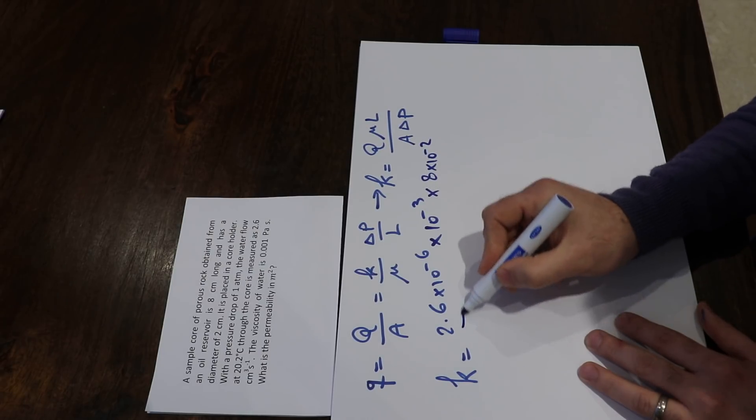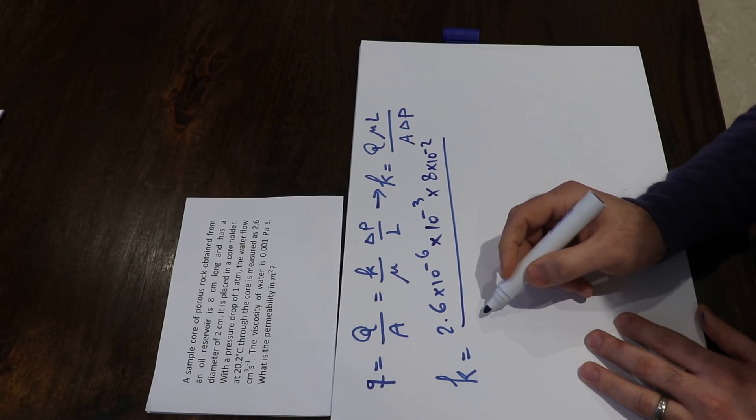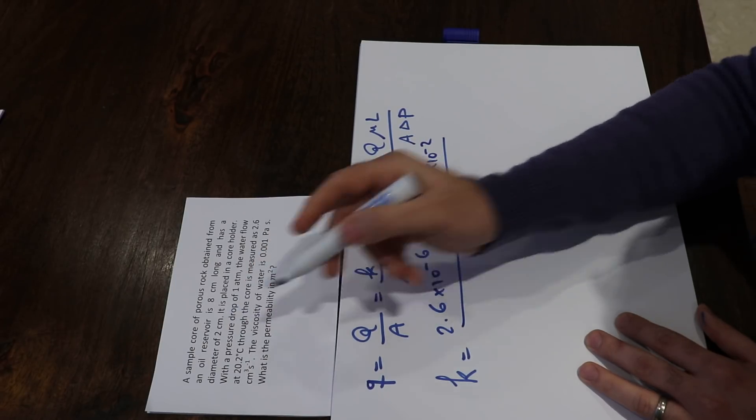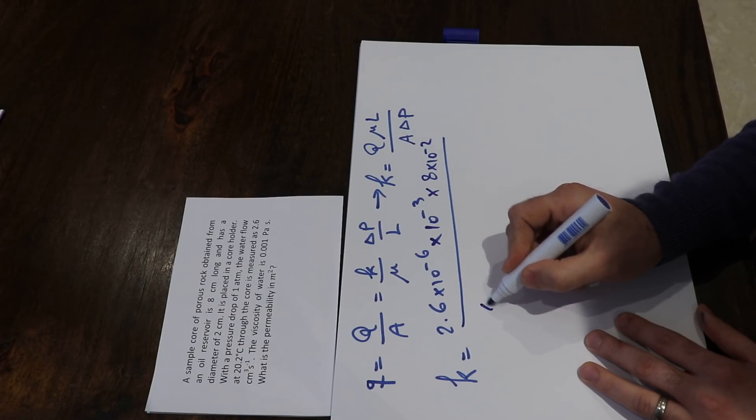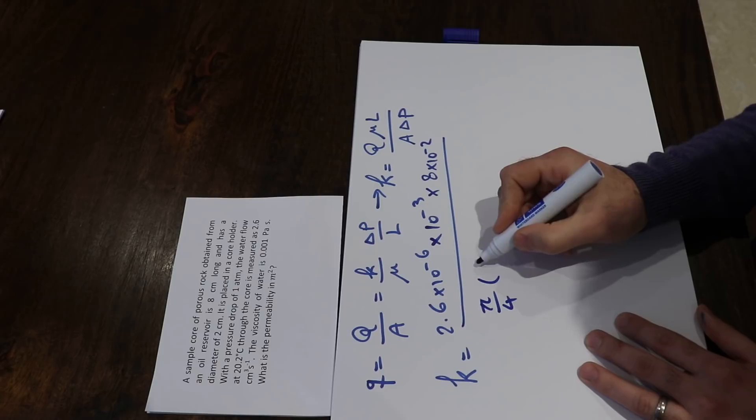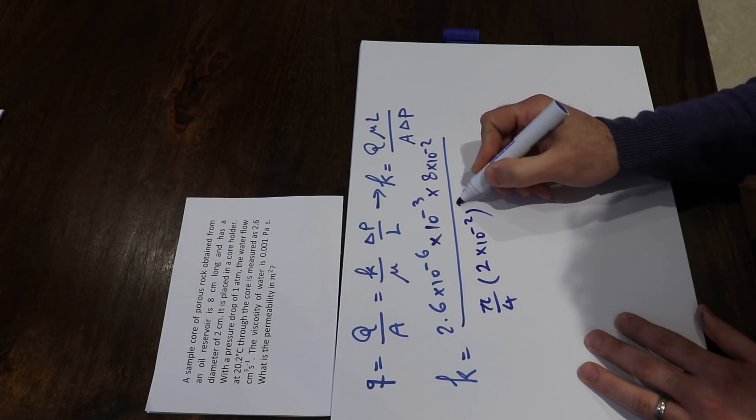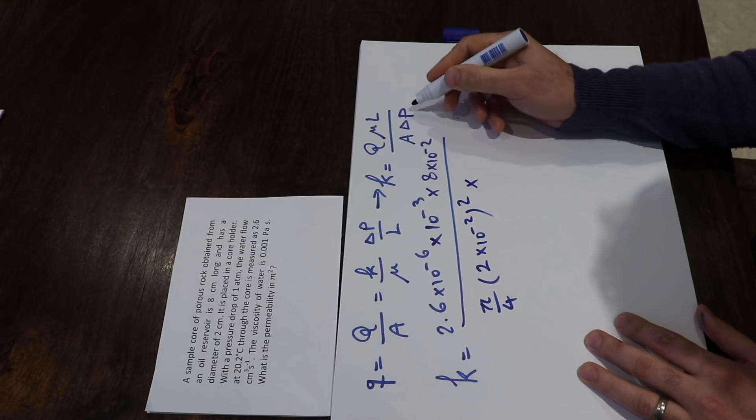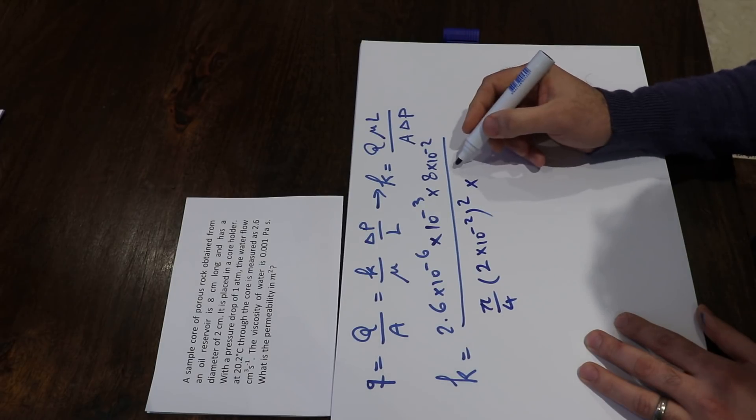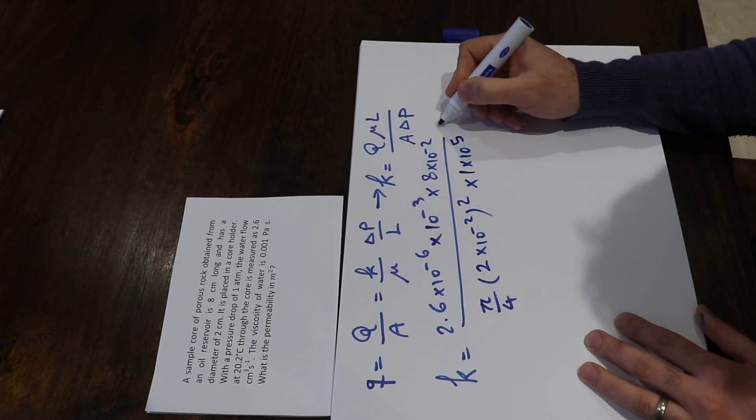divided by A (the area). Since the diameter is 2 centimeters, the area is π/4 × D², which is π/4 × (2 × 10⁻²)² meters, times ΔP. And ΔP is 1 atmosphere, which equals 1 × 10⁵ Pascals.